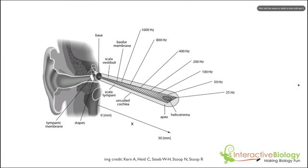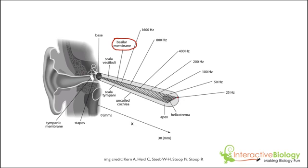Here we have the cochlea that we unrolled, and what you'll see is a membrane that we call the basilar membrane. What you're going to notice about the basilar membrane is it's thinner over here than it is over here. At this end it's significantly thinner, and as it goes away from the oval window where the malleus, incus, and stapes connect, it gets thicker and thicker until it's thickest right here at this end.